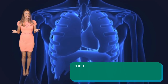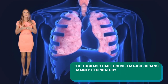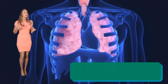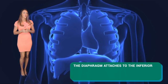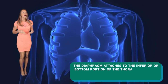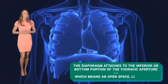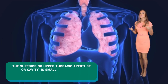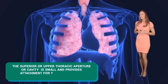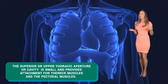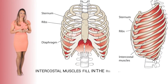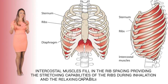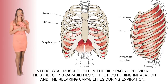The thoracic cage houses major organs, mainly the respiratory organs, in addition to the heart and the upper parts of the kidneys. The diaphragm attaches to the inferior or bottom portion of the thoracic aperture, which refers to an open cavity-like space. The superior or upper thoracic aperture is small and provides attachments for the neck muscles and the pectoral muscles. Intercostal muscles fill the rib spacing, providing the stretching capabilities of the ribs during inhalation and the relaxing capabilities during expiration.